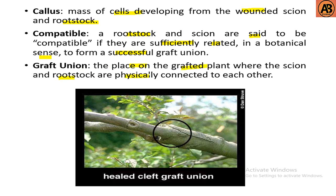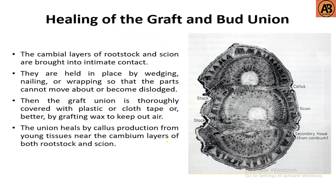Graft union is the place on the grafted plant where the scion and rootstock are physically connected to each other. Here you can see cleft grafting where the scion and rootstock are held together.